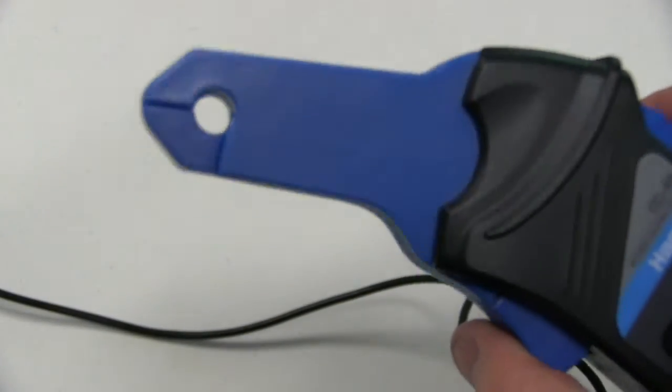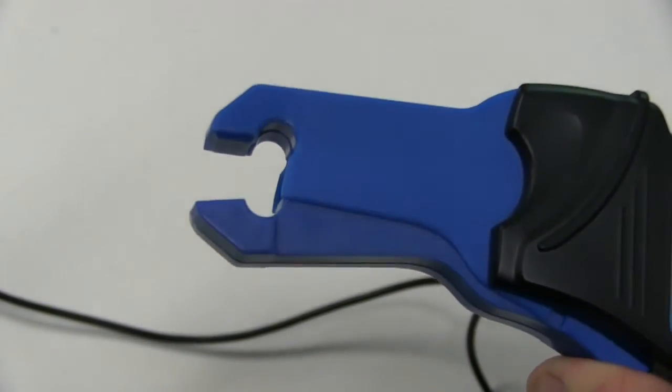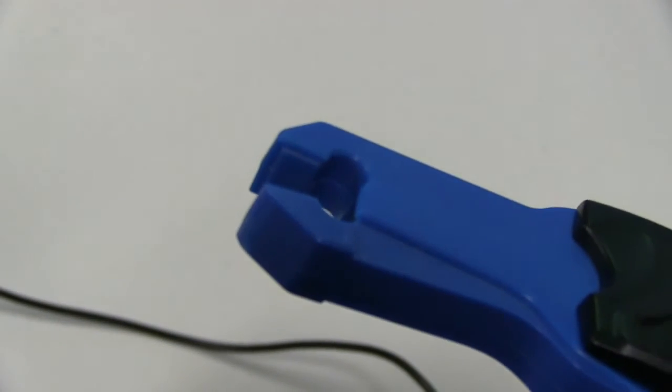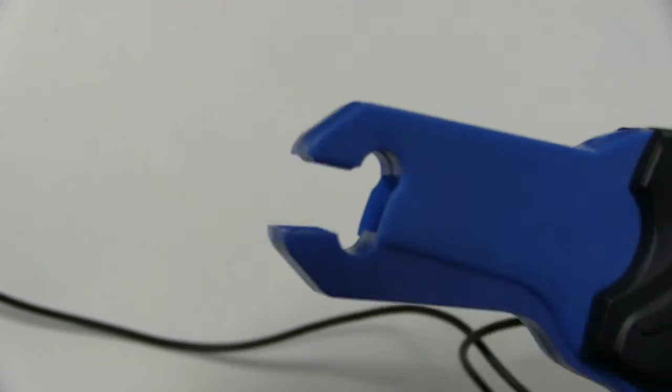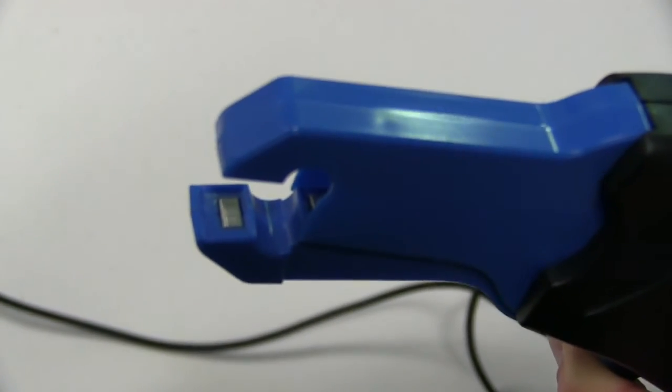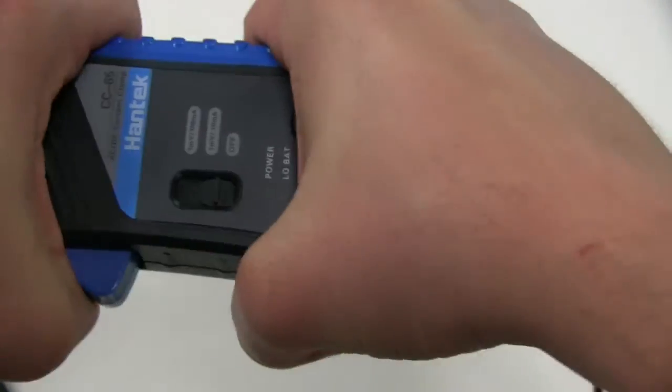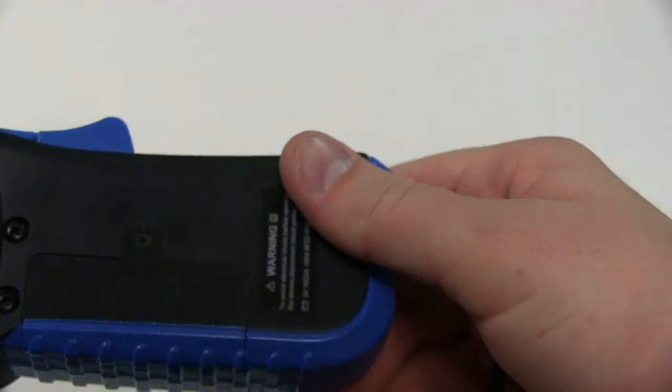So the maximum wire diameter is nine millimeters that this clamp can accept. And you can see this side here is fully insulated. But this side, you can see a bit of that sort of metallized core material there. And it's pretty nice construction. It doesn't feel plasticky or cheap. It's actually not too bad.